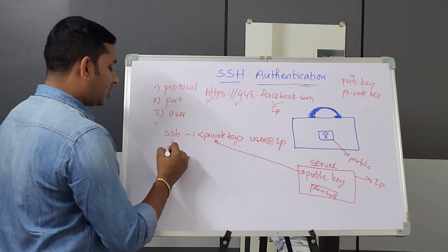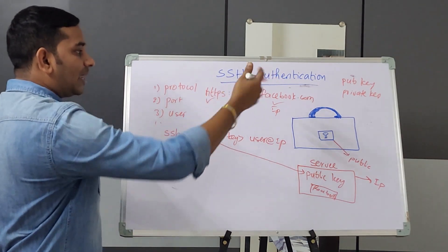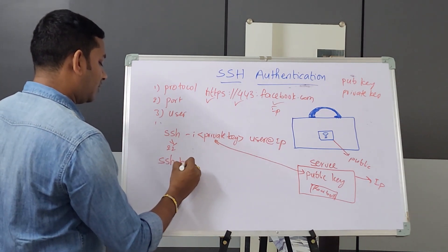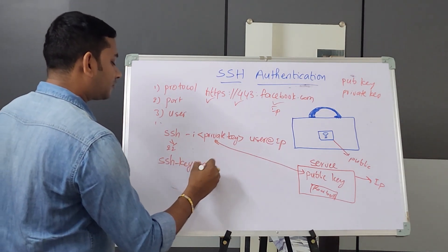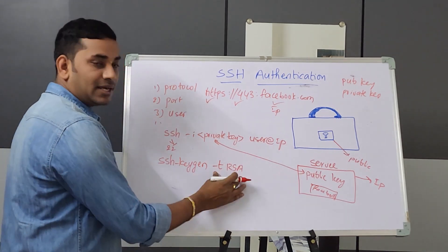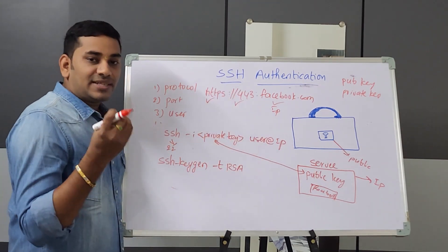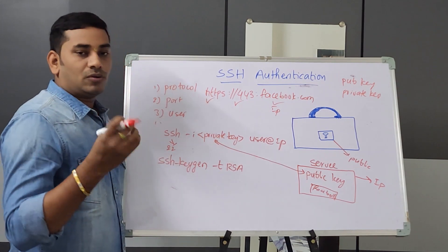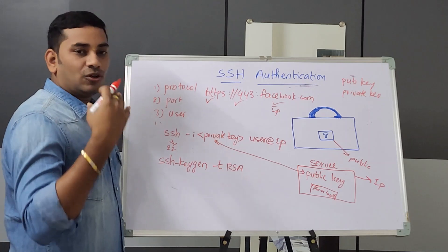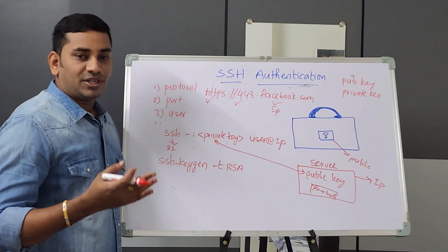By default, SSH runs on port number 22. To generate a public key and private key, there is a command: ssh-keygen -t rsa. RSA is the default encryption algorithm. Within milliseconds, using prime numbers and multiple mathematical algorithms, the key pair is generated. Mathematicians designed these algorithms — we don't need to understand the math itself.